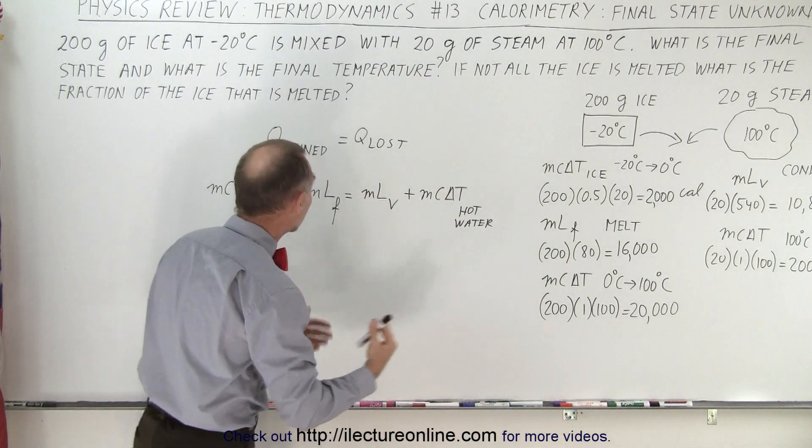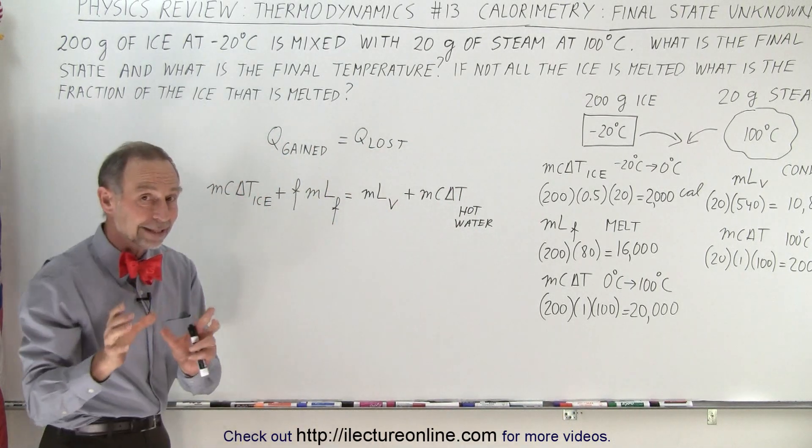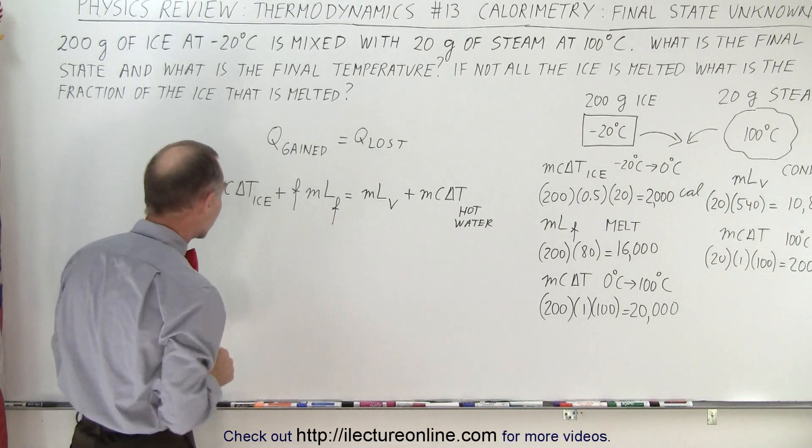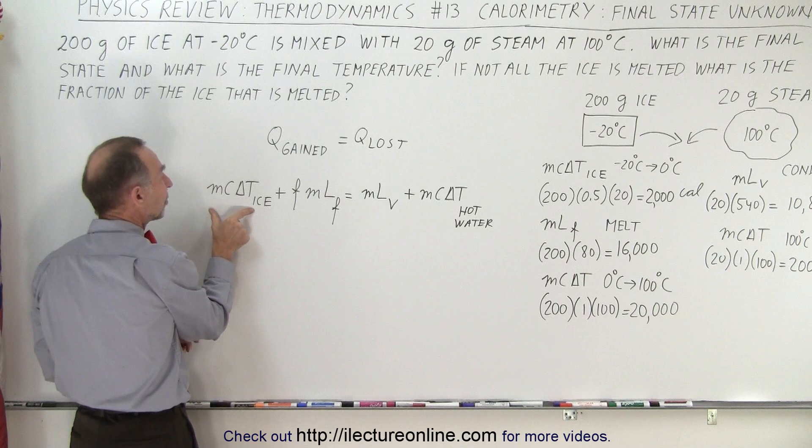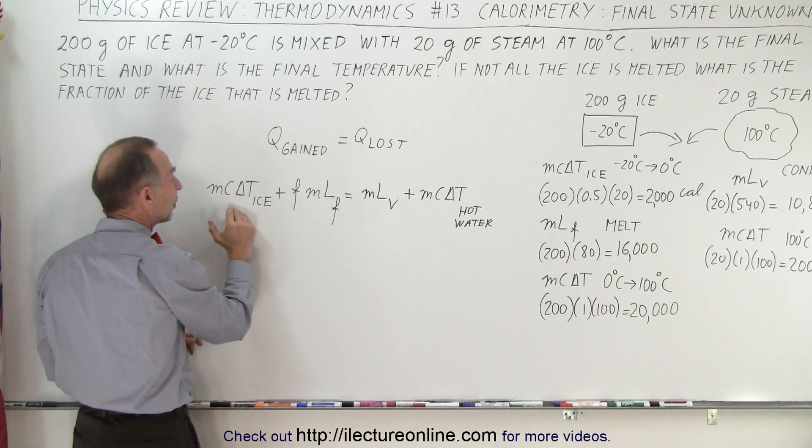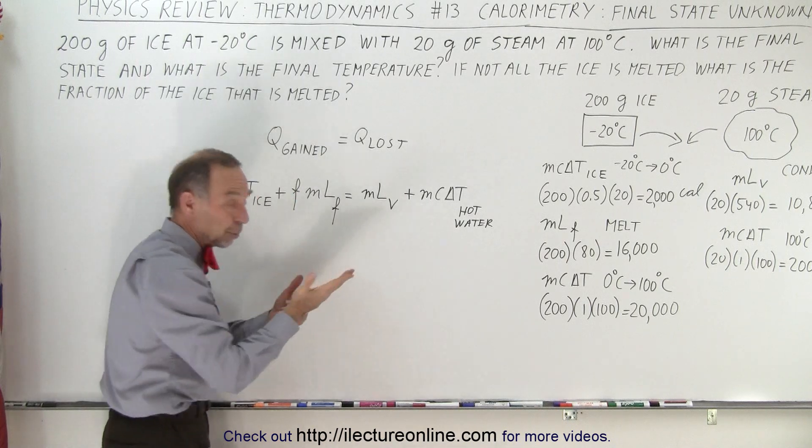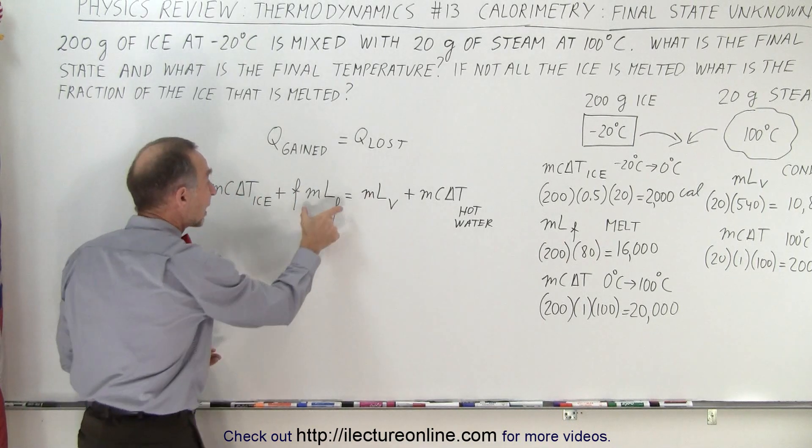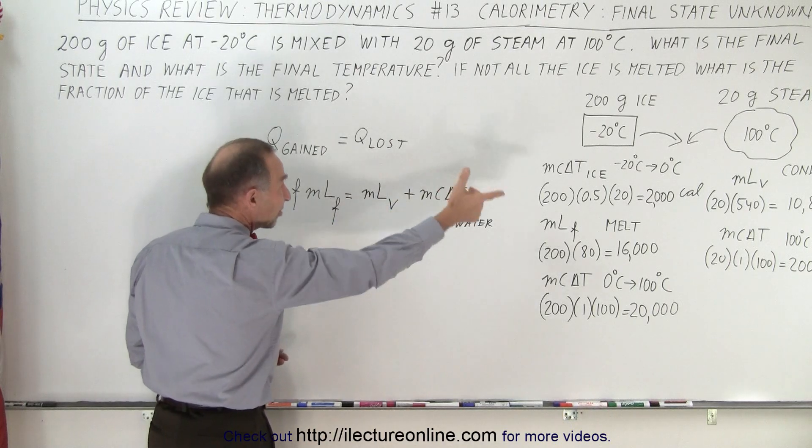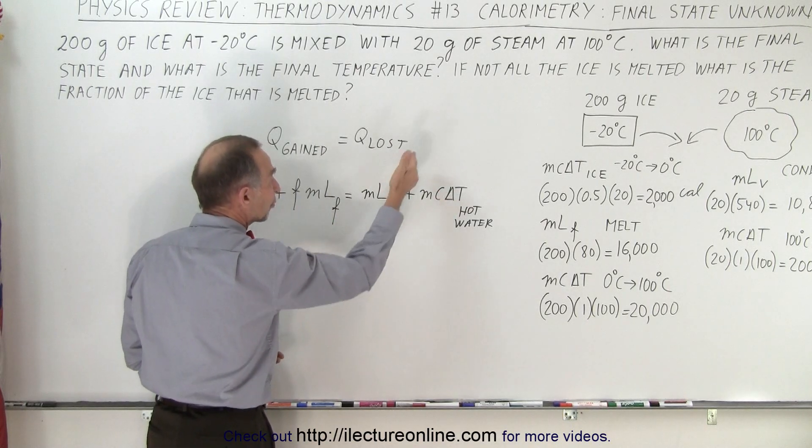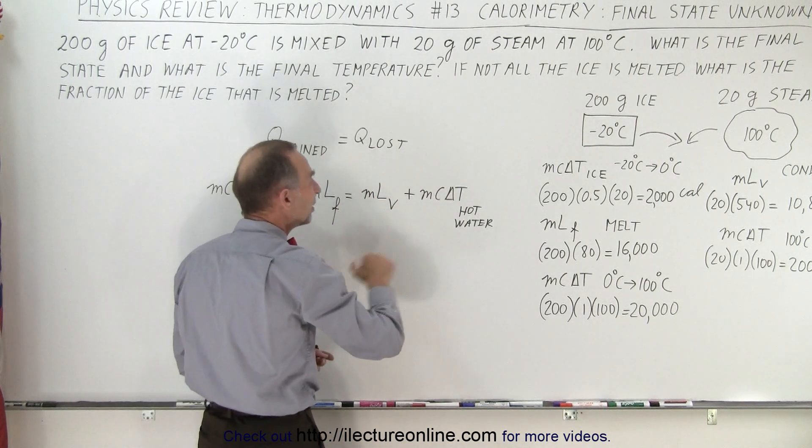So now you need the equation where you say heat gained equals heat lost. Remember that all the delta T's must be positive on both sides of the equation. So here on the left side, the ice is gaining heat to go from minus 20 to 0, and it's gaining heat to melt a fraction of the ice. F represents a fraction between 0 and 1 of the ice that's melted.